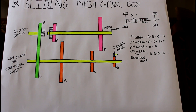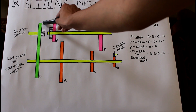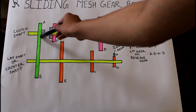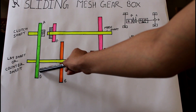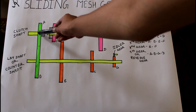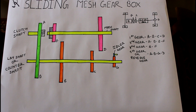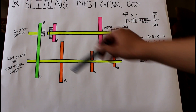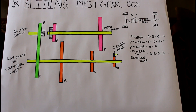Power from the engine enters through gear A, the clutch gear, and is transmitted to gear B. These gears are always kept in contact, so they are always in a moving condition. However, when our vehicle is at rest, this is called the neutral position. At the neutral position, the vehicle cannot move, but the engine can run.